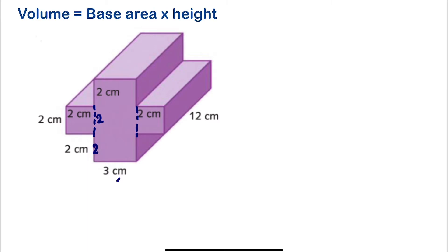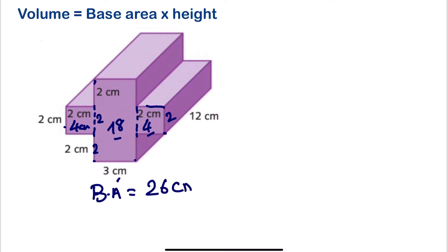The area of the first rectangle is 18 — that's six times three — giving us 18 centimeters squared. The second rectangle has dimensions two by two, giving us 4 cm². The third also gives us 4 cm². Adding the base area: 18 plus 4 plus 4 equals 26, so our base area is 26 cm².